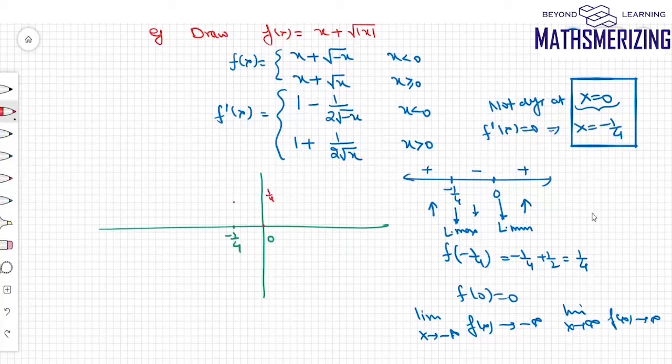So I'll mark these two points: 0 and minus 1/4. So at 0 it is 0, and at minus 1/4 it is plus 1/4 and it's a local maximum.